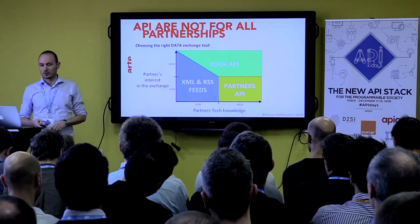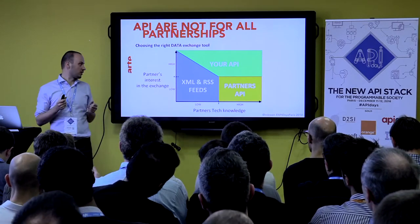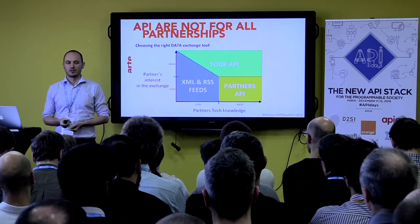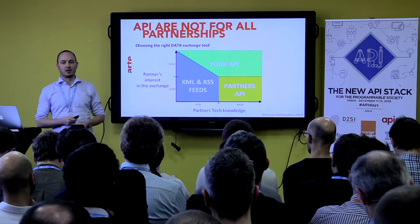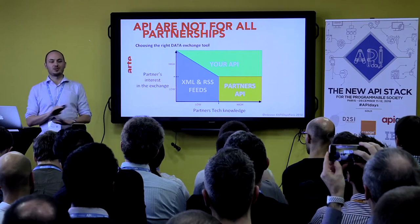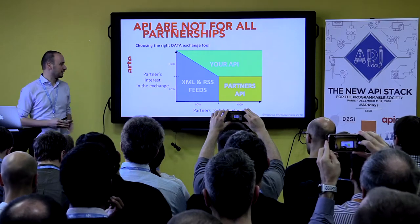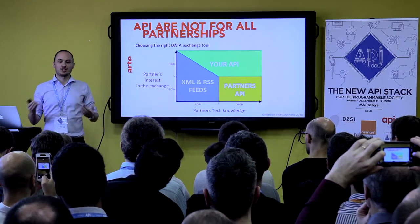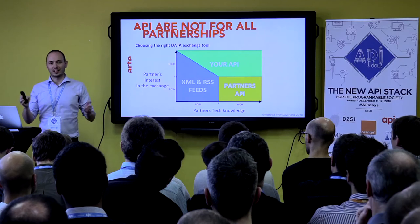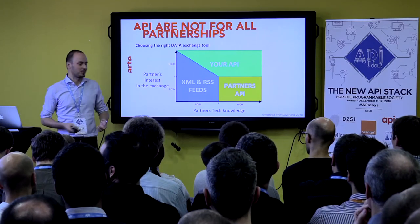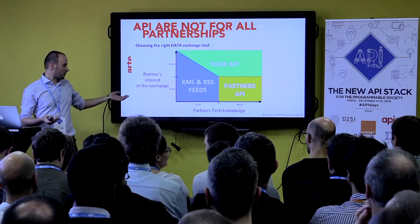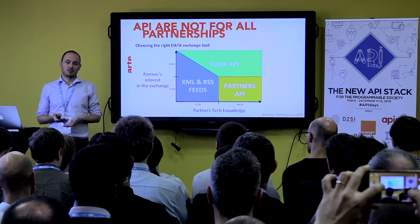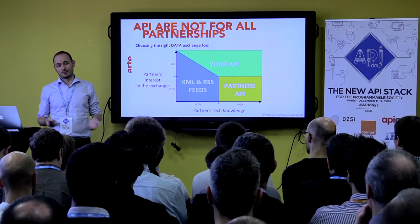I built a small graph to explain this. Basically, if a partner has a lot of interest in working with you and has a lot of tech knowledge, they're going to use your API — that's great. But if you're working with someone like Google, maybe they don't have much interest in using your API. And for partners where tech knowledge is not good, in some use cases it's probably best to stick to XML or RSS feeds — it also works well.